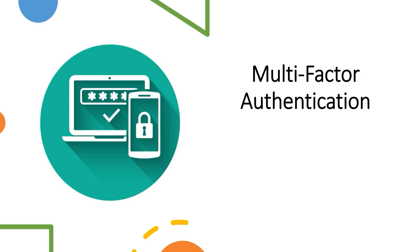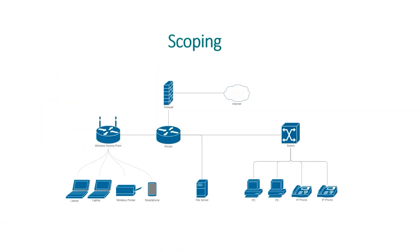Scoping is crucial — we will have a complete lesson on this, but for now it's important to have an idea of what it means. Scoping refers to the process of identifying all system components, people, and processes to be included in the PCI DSS assessment. Normally the first step of a PCI DSS assessment, it is also probably the most important and most difficult step.